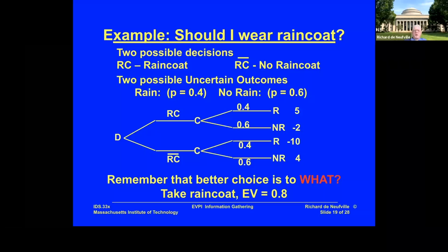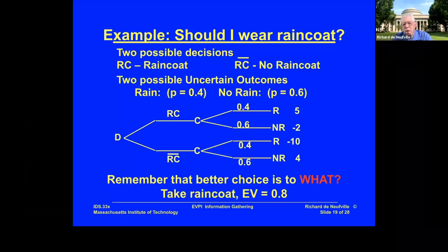Remember the raincoat problem: you're getting up in the morning and deciding whether to take the raincoat or not. There may be rain or no rain, as in the diagram. There's a prior assessment — the probability is 0.4 for rain and 0.6 for no rain — and there are outcome values of 5, minus 2, minus 10, and 4, which I've invented just to give us numbers to play with. That's the original problem.